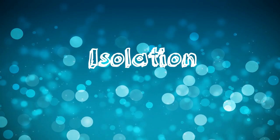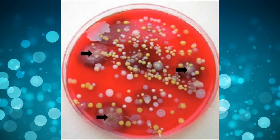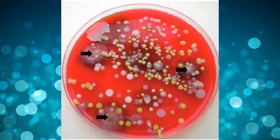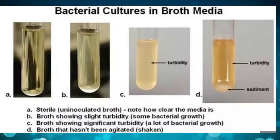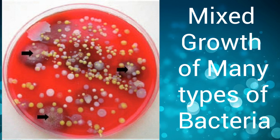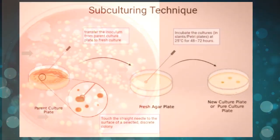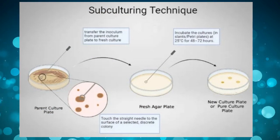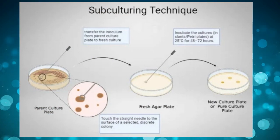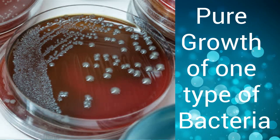Once we see visible growth in the culture medium, we proceed for isolation. The growth may take the form of separate colonies — discrete amounts of cells on solid media — or turbidity produced by free-floating cells inside liquid media. We usually get mixed growth on the first culture from human samples. We need to isolate the suspected colony of pathogen by subculturing one or more bacterial colonies into separate fresh culture media, which gives us pure growth in the next cycle of culture containing only one pathogen.